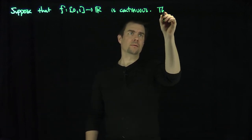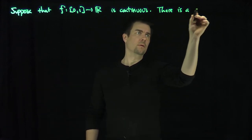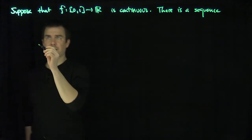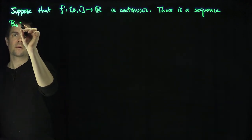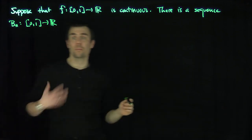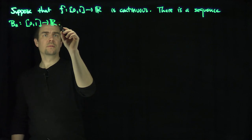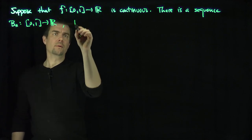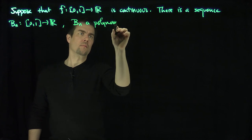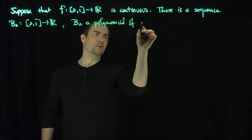So let's suppose that f maps [0,1] into R is continuous. There's a sequence Bn of x, Bn mapping [0,1] into R, where Bn are polynomials of degree n.